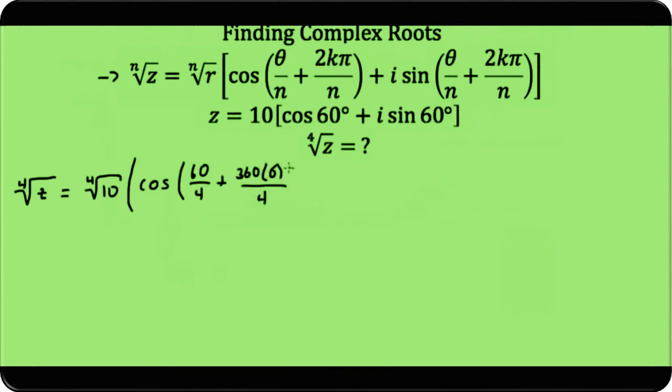plus i times sine of (60°/4) — that's θ/n — plus (360k)/4, which in this case is 0/4. This is our first solution. Simplifying it a little bit: the fourth root of 10, that's approximately 1.78. 60° over 4, that is 15°. 360 times 0